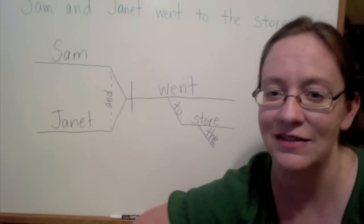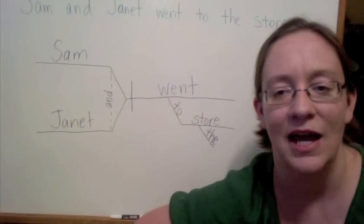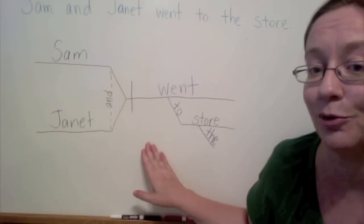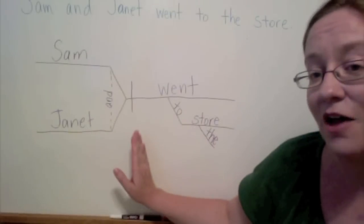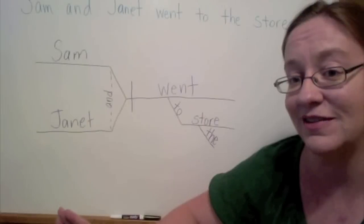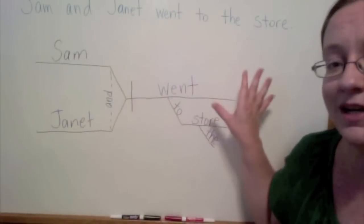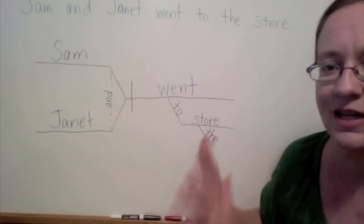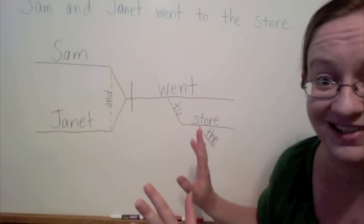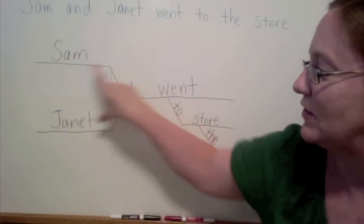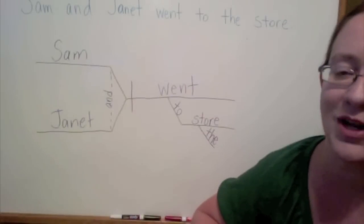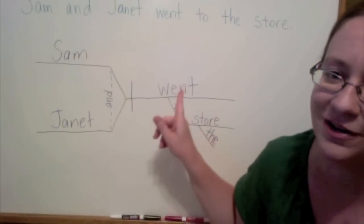There's another way to illustrate this that we're going to try in class — something called sentence diagramming. I drew the diagram for this sentence on the board. Sam and Janet are the subject. All subject words in a sentence diagram go on the left side of the diagram. All the words related to the predicate go on the right side. It's a nice way to see the subject and predicate separated by a line. You can see that Sam and Janet are connected together and sharing the predicate 'went to the store.' We know they are a compound subject because they share one predicate.